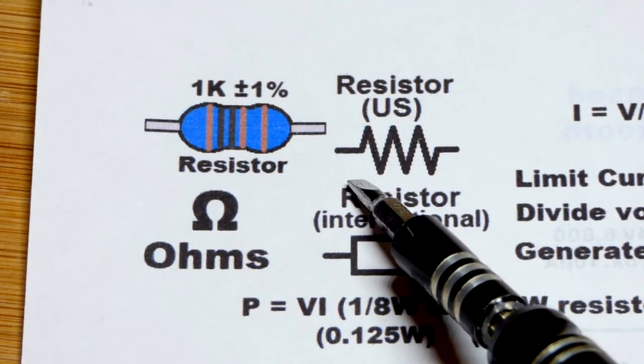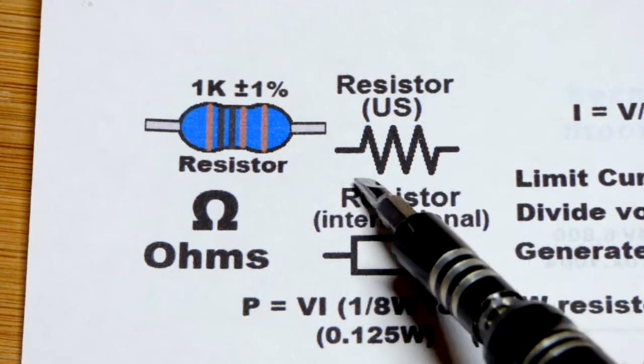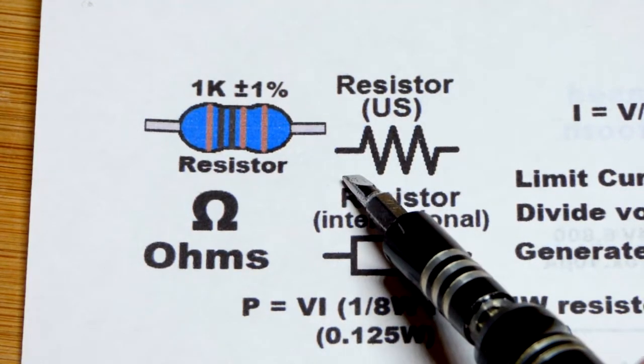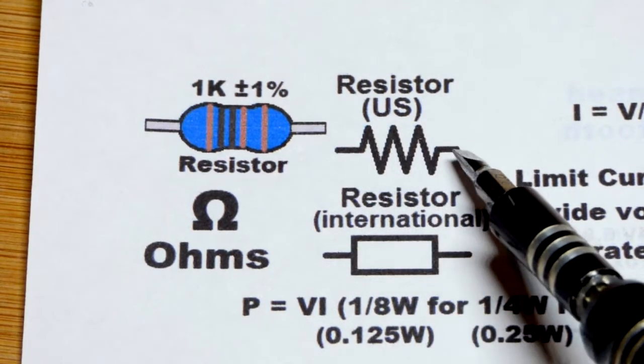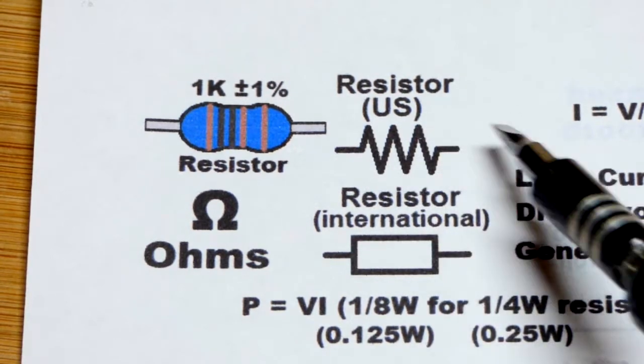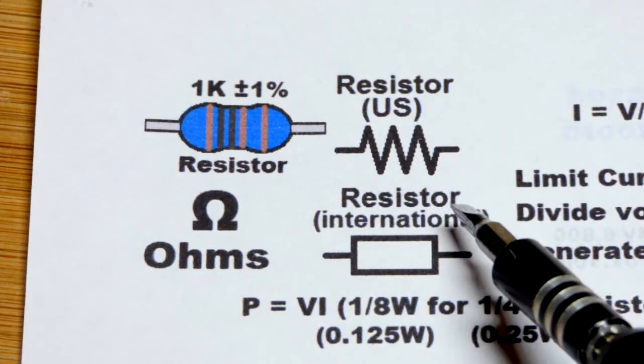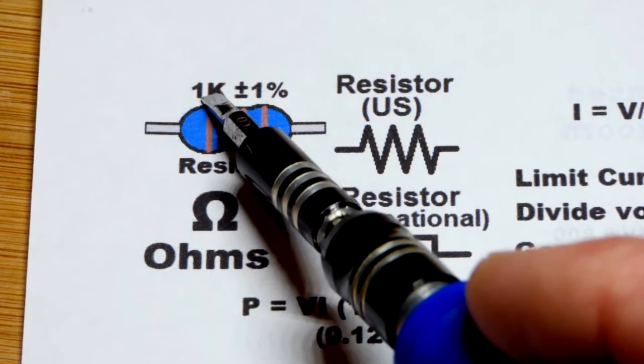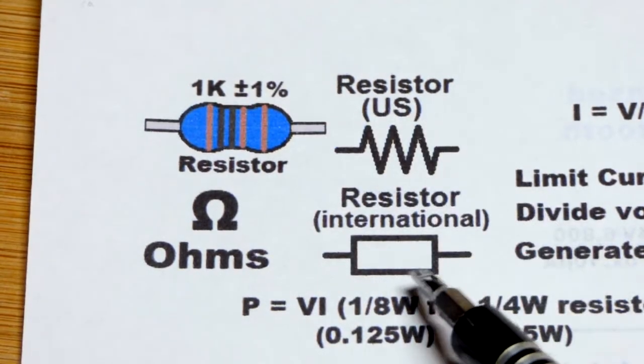When you're studying electronics, though, mostly you're going to be looking at sheets like this or other websites that use a schematic symbol. It just uses a symbol to indicate that you got a resistor in that spot, and it'll likely have the value written above it.